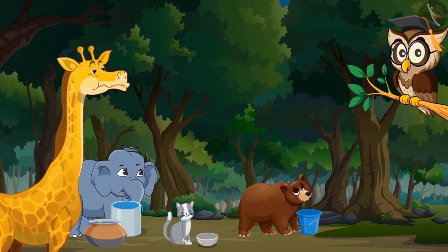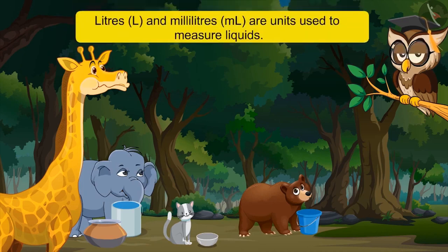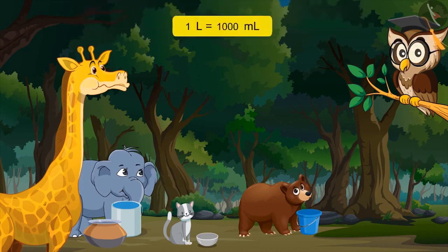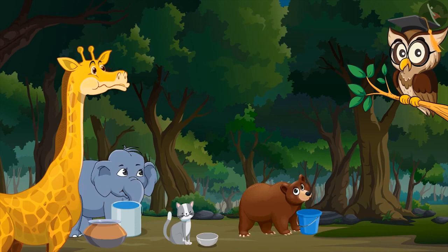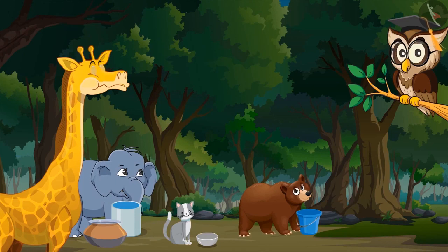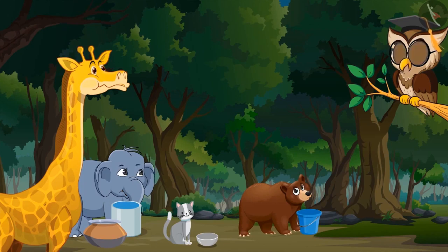What are litres and milliliters? Litres and milliliters are units used to measure liquids. There are one thousand milliliters in a litre. I drank one thousand milliliters of water. You have drunk more than five litres of water. Did I also drink more than a litre of water? No, Cat Queen, you have drunk even less than half a litre of water. Let me explain this to you in some detail.